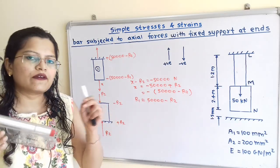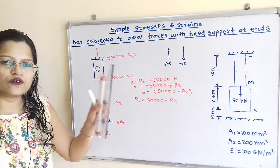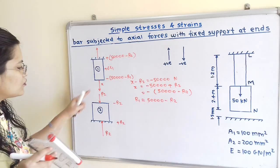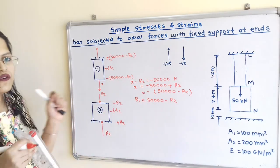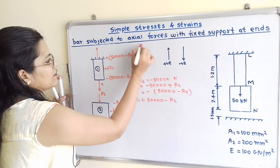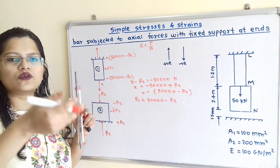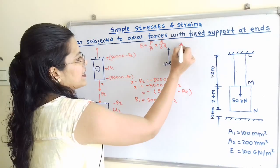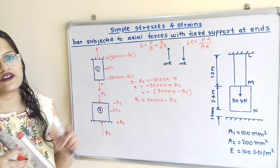Now we have to find out delta L1 and delta L2. Delta L1 is associated with a tensile force, so due to tensile force the length increases — giving plus delta L1. For bar 2, there is a compressive force, and due to compressive force the length decreases — giving minus delta L2. To find delta L, we use the relation: Young's modulus E equals stress divided by strain, where stress is P by A and strain is delta L by L. Therefore, delta L equals PL divided by AE. This is the formula to calculate delta L.